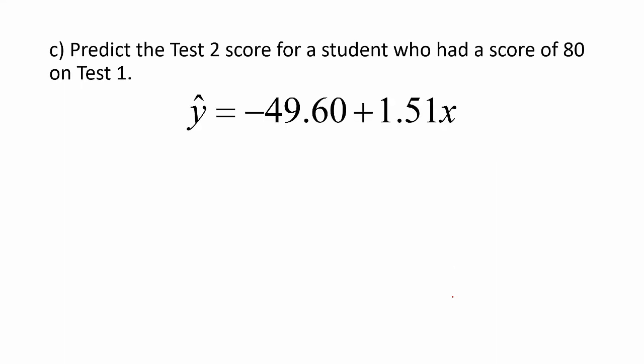Finally, predict the test two score for a student who had a score of 80 on test one. If I use this rounded equation, y hat will be equal to negative 49.60 plus 1.51 times 80, our score on test one. So y hat equals negative 49.60 plus 120.80 or 71.20.